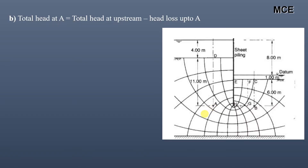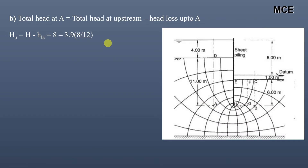The total head at A equals the total head at upstream minus the head loss up to A. The total head at upstream is 8 meters. The head loss up to A equals the number of equipotential drops up to A multiplied by head loss per equipotential drop. From the flow net, we can see that the number of equipotential drops up to A are 3.9, and head loss per equipotential drop is 8/12, so the total head at A equals 5.4 meters.